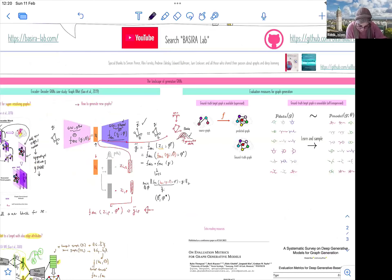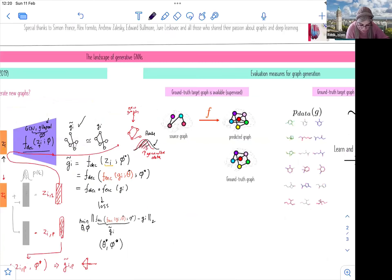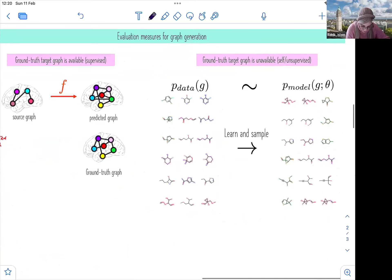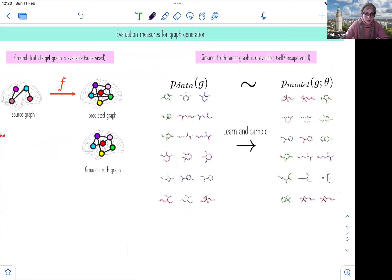Now, the very last part here is the evaluation measures for graph generation. So we're going to look at two simple examples here. The first one is actually very simple. So if we have, how can we evaluate the quality of the generated graph?